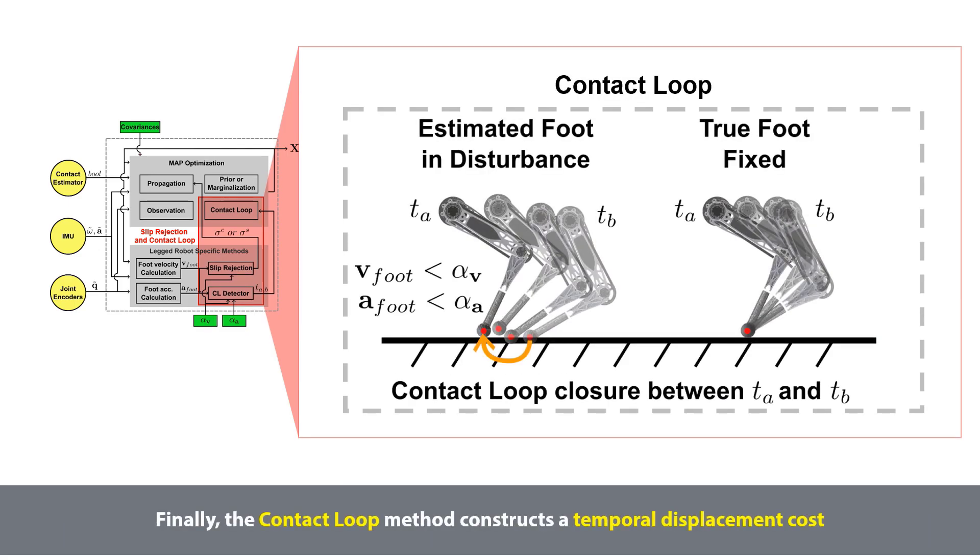Finally, the contact loop method constructs a temporal displacement cost when the calculated foot velocity and acceleration are lower than the threshold alpha v and alpha a. Note that the contact loop method does not apply to filter algorithms that marginalize the recent states.